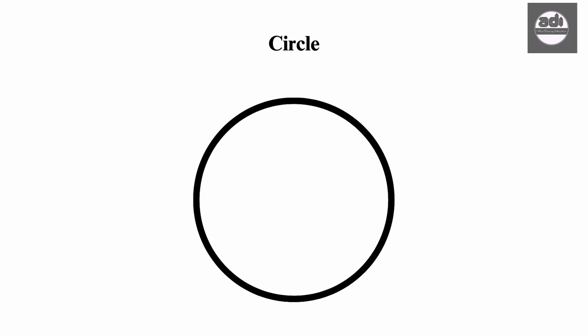A circle is a two-dimensional closed shape where the set of all the points in the plane are equidistant from a given point called the center.